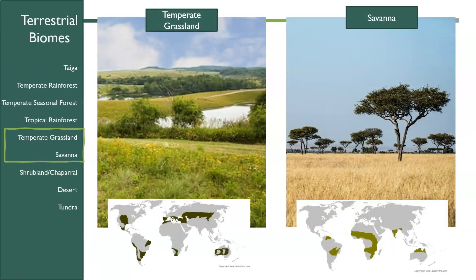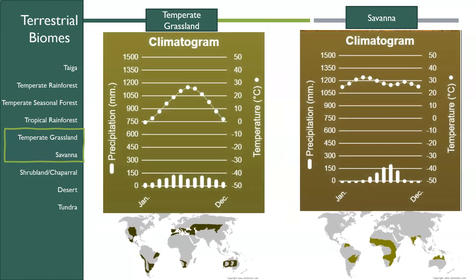If we compare our grasslands, we have the temperate grassland — like prairies or the steppes in Russia — and then our savanna, again found in different areas, with the savanna only in the southern hemisphere. Looking at their climatograms, our temperate grassland has cooler winters and warmer summers, with not a ton of precipitation but fairly consistent throughout the year. Our savanna is very warm year-round and either gets a lot of rain or none.